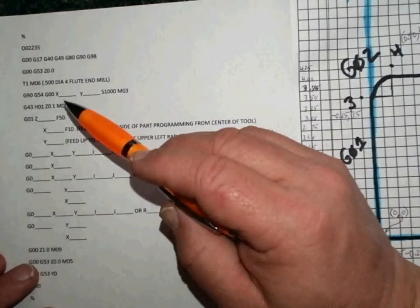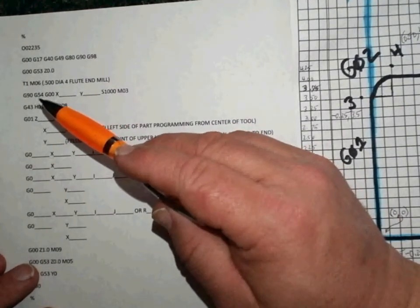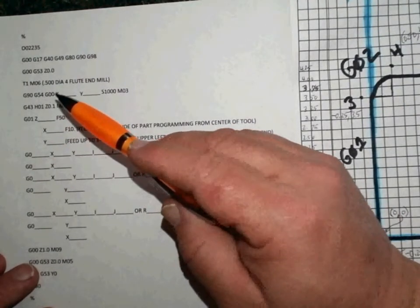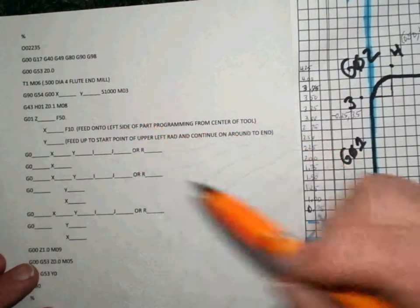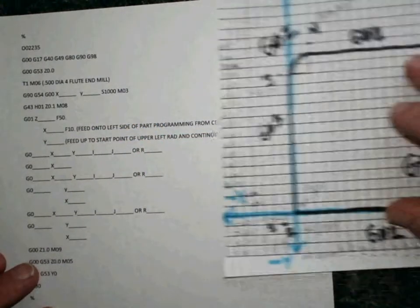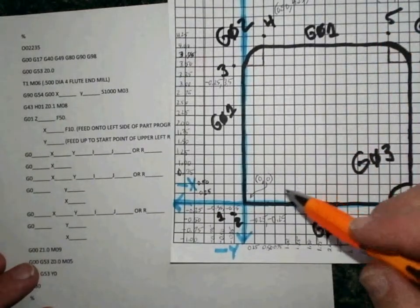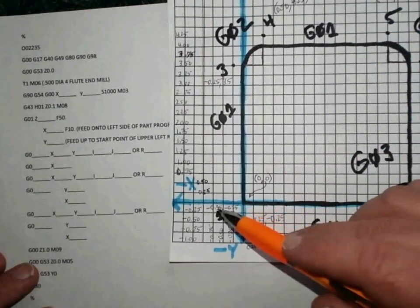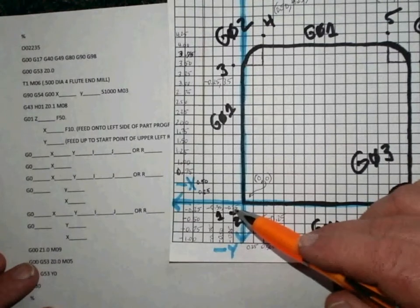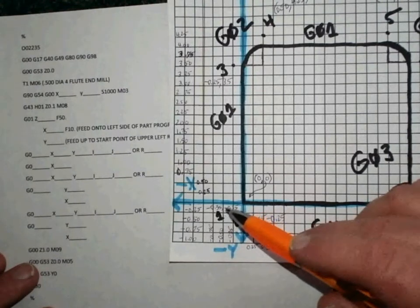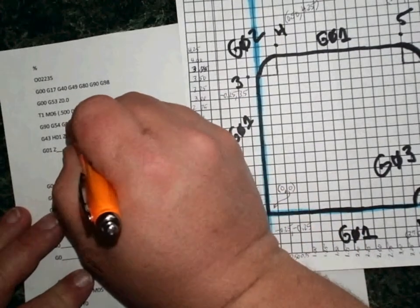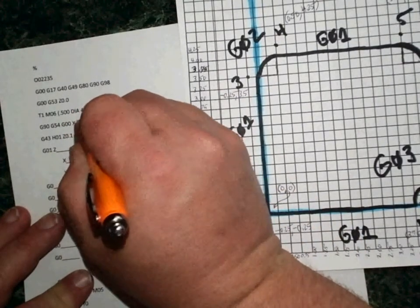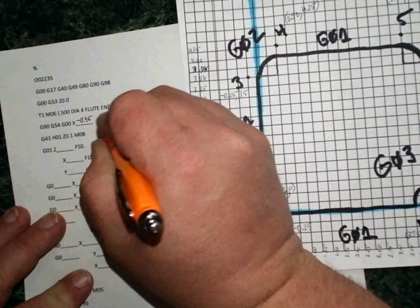So now that we've got our coordinates all worked out on our graph paper, we can come back and fill out our G-code program. In this particular case, we're coming in rapid to the first X and Y location. We notice right here that the first X and Y location is minus 0.35 and minus 0.25, so we can just put those numbers right in up here. So we can do minus 0.35, minus 0.25.